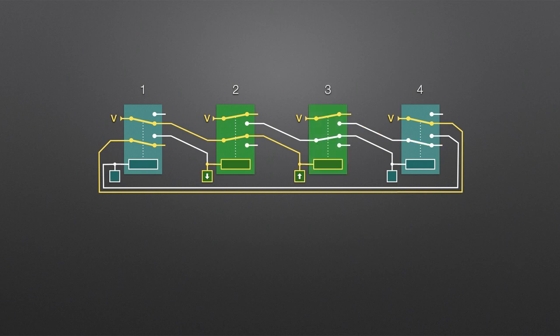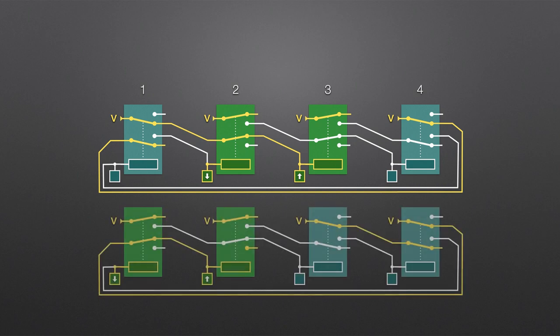Relay three is activated, and the capacitor across its coil begins charging. We're now in a similar state to our starting position, except everything has moved on one relay.